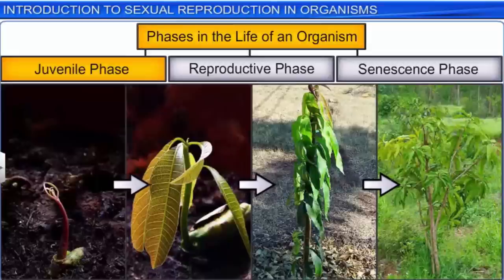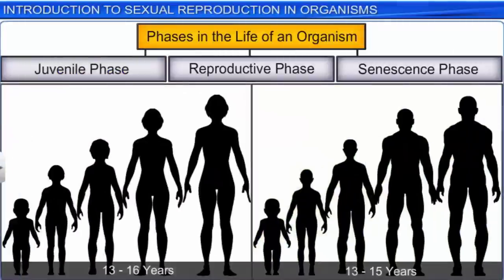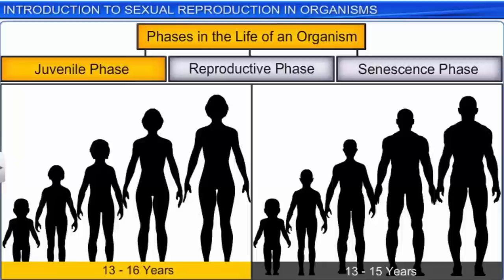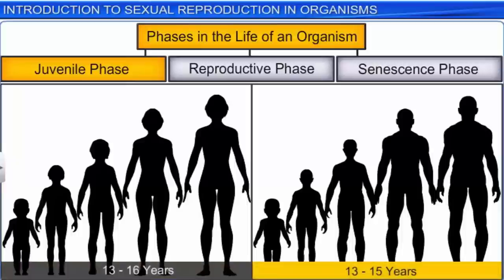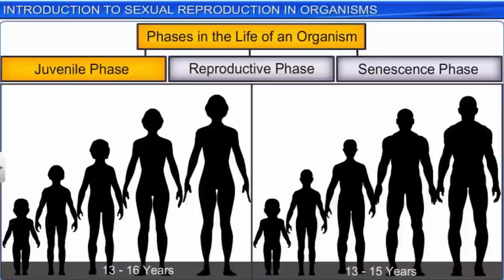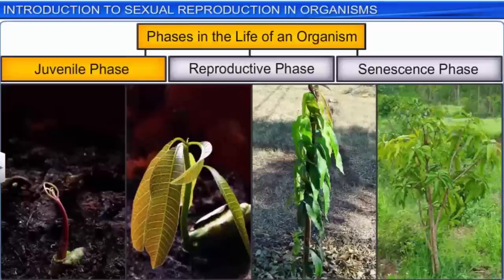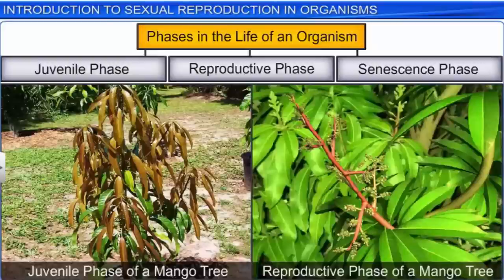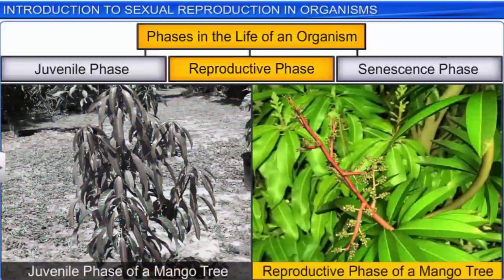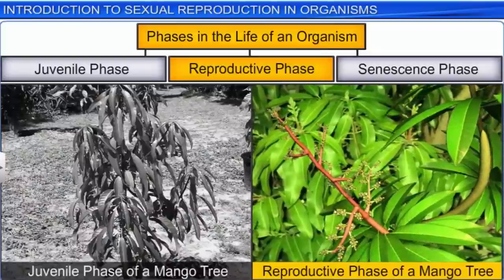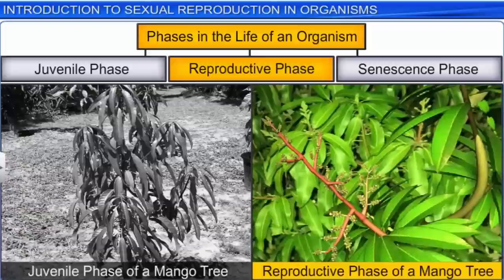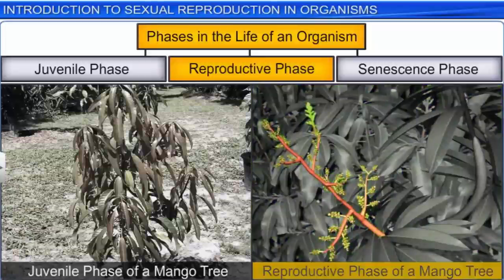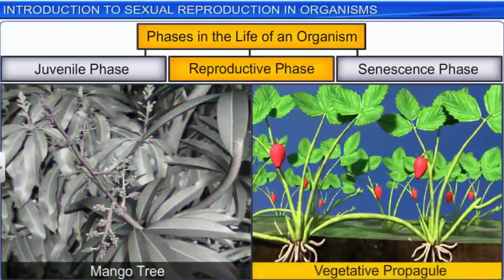The duration of the juvenile or vegetative phase varies in different organisms. In human beings, for instance, the juvenile phase lasts for 13 to 16 years in females and 13 to 15 years in males, whereas a mango tree remains in the vegetative phase for around 3 to 5 years. The juvenile phase is succeeded by the reproductive phase in both plants and animals. In the case of plants, this phase is marked by the appearance of flowers or vegetative propagules such as runners.